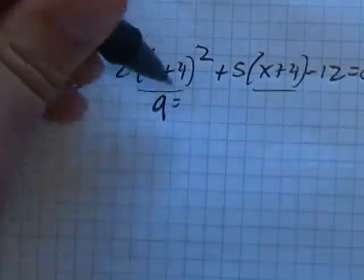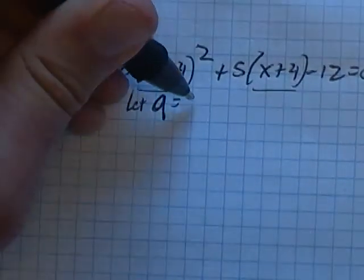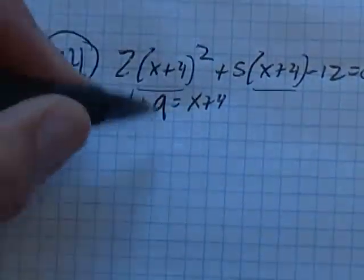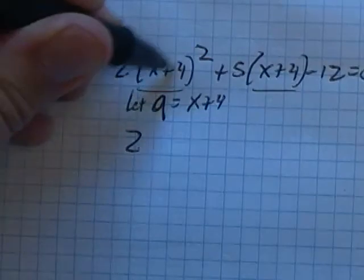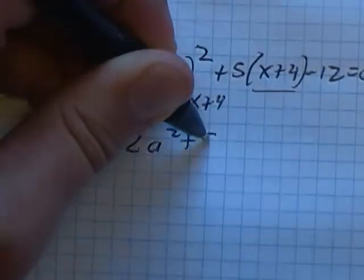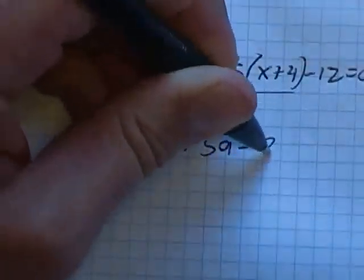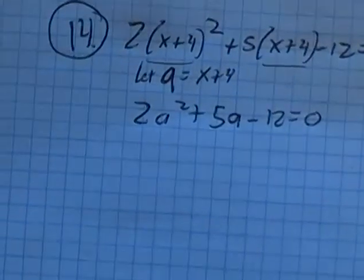I'm just gonna use a dummy variable, let a equal x plus four. So I'm gonna plug that in. This would be 2a squared plus 5a minus 12 equals zero.